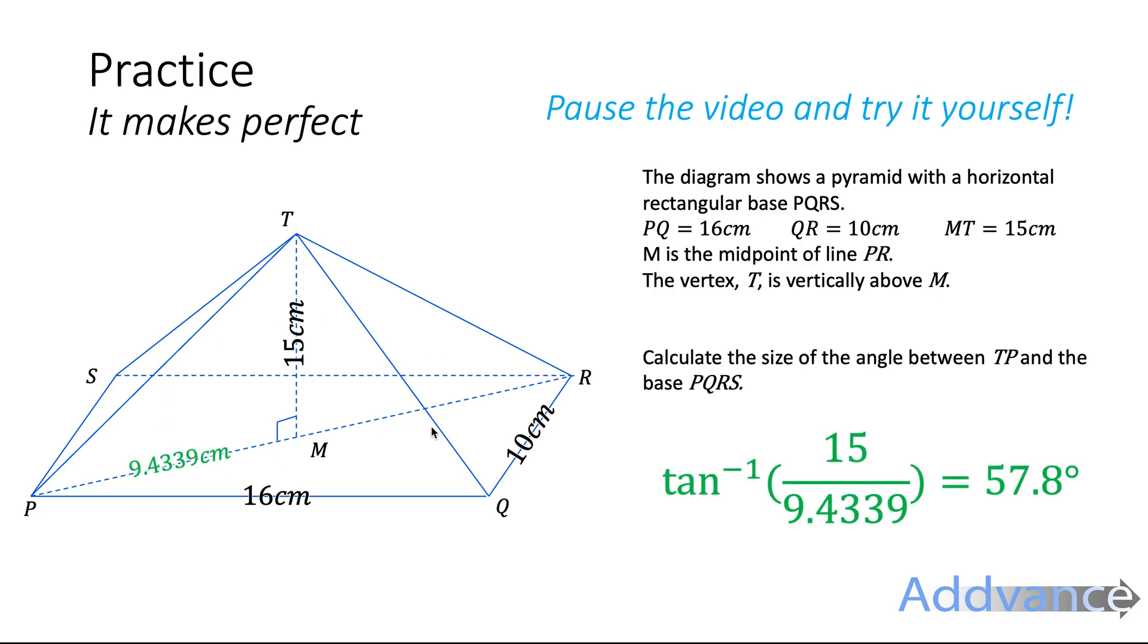So you should have got the length from P to M is 9.4339cm, and from that you should have got that inverse tan of 15 over 9.4339 was 57.8 degrees, and that is the final answer.